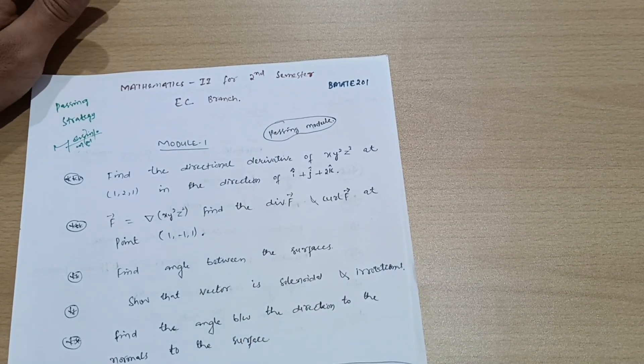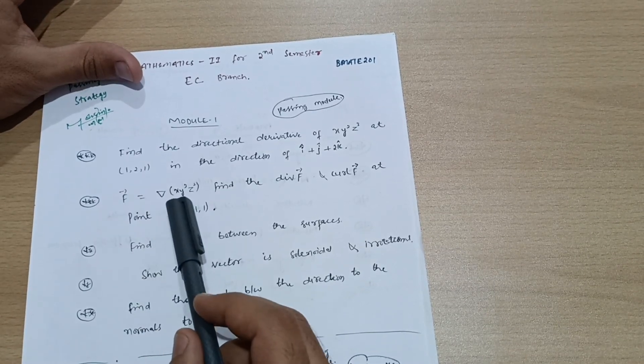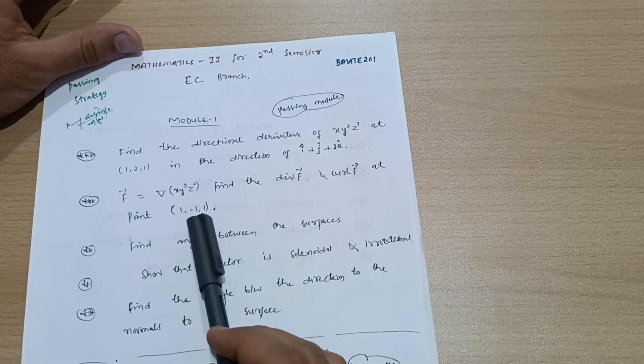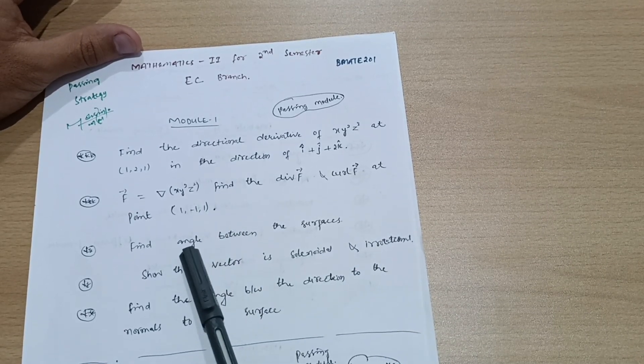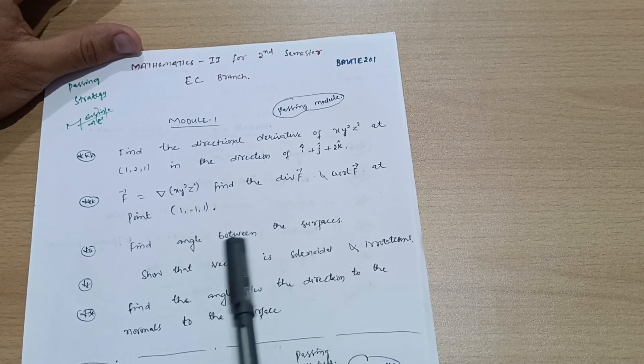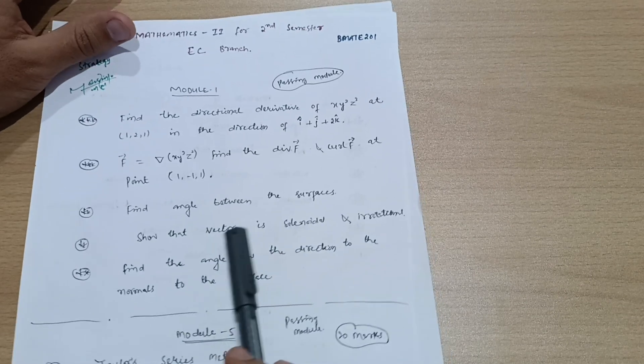Next question: f equals grad of xy³z², find the divergence of f and curl of f at (0.1, -1, 1). Next concept is angle between two surfaces - equations will be given and you have to find the angle. Also, show that a vector is solenoidal and irrotational.